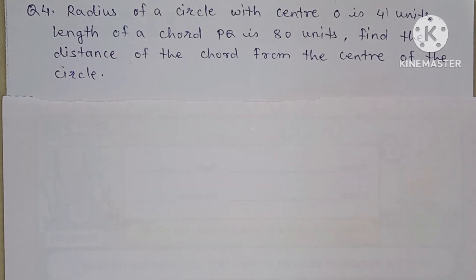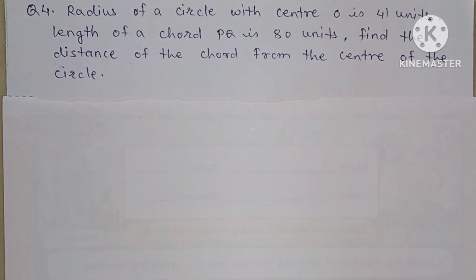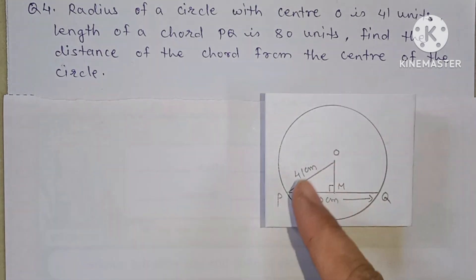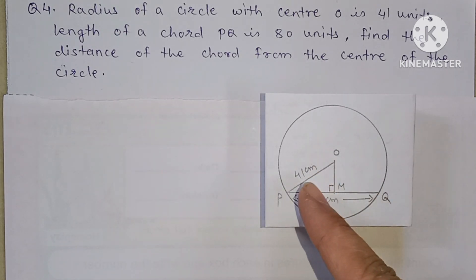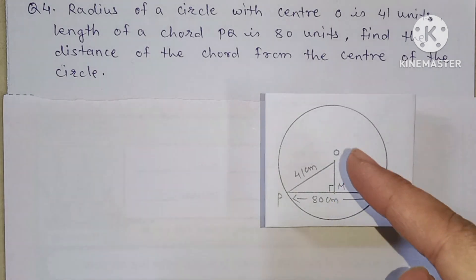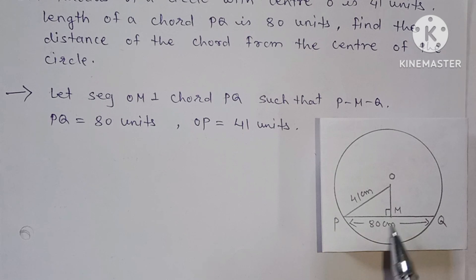Question number 4: the radius of a circle with center O is 41 units. The length of chord PQ is 80 units. Find the distance of the chord from the center of the circle. Here, PQ is the chord of 80 units, OP is the radius of 41 units, and we need to find the distance OM from the center to the chord.